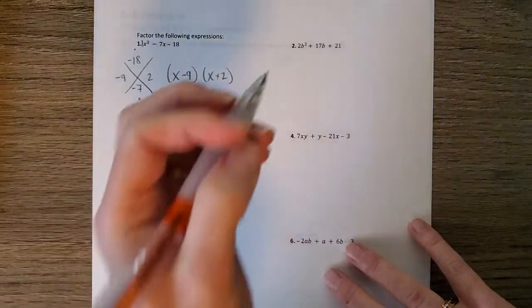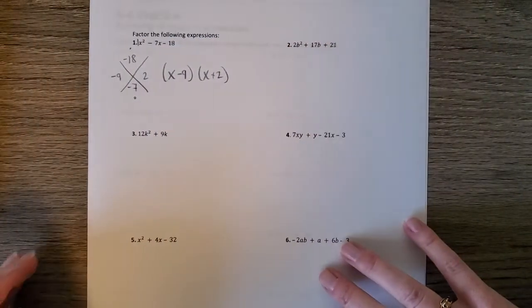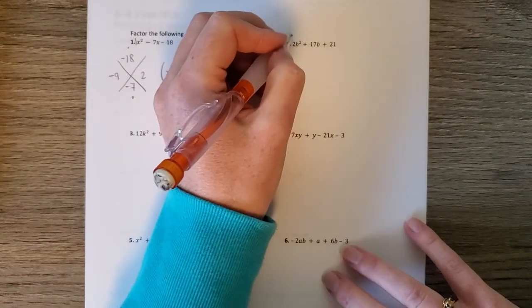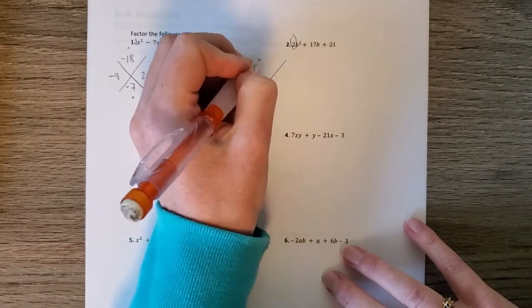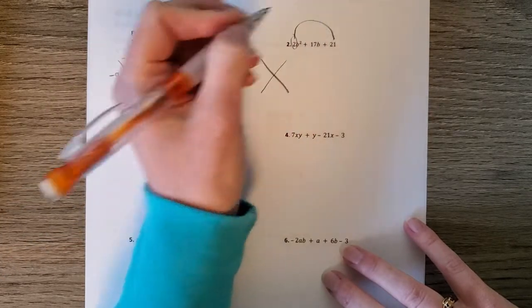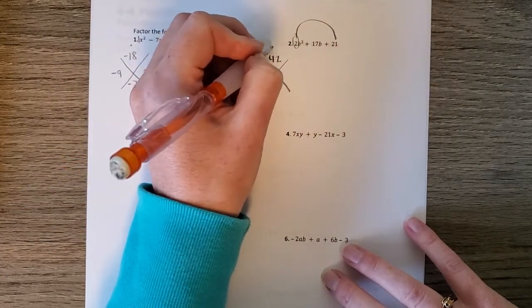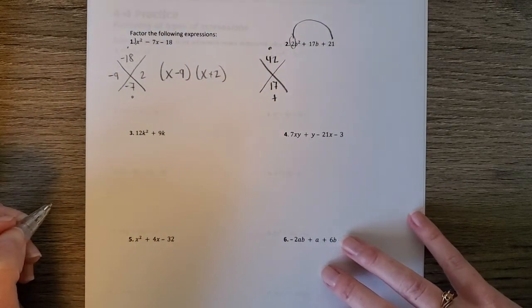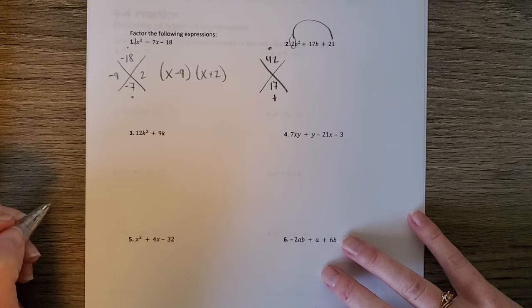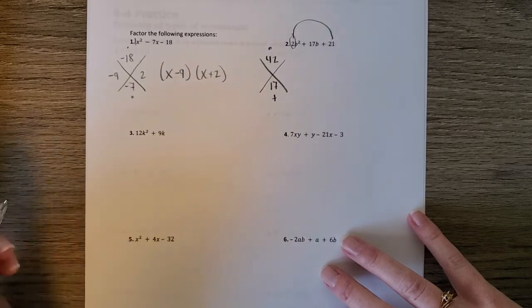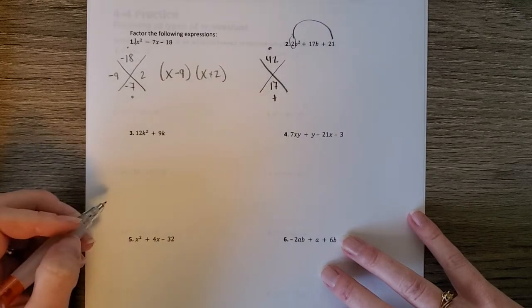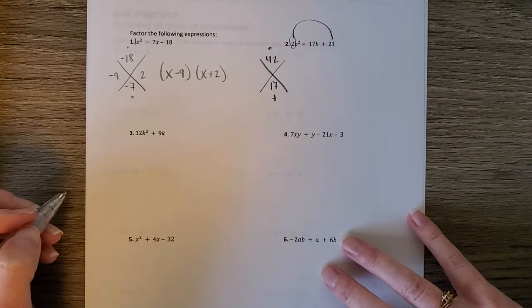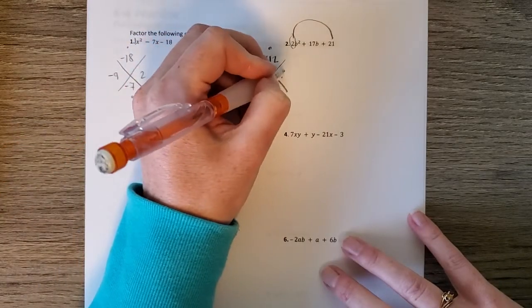And then if we look at number 2, again, we're always looking for a GCF. There isn't one. This has a is not 1. So we need to split the middle. 2 times 21 is 42. Multiplies to 42 and adds to 17. Let's see. 42, 21. So 1 and 42. 2 and 21. 3 goes in and 14. So 3 and 14.